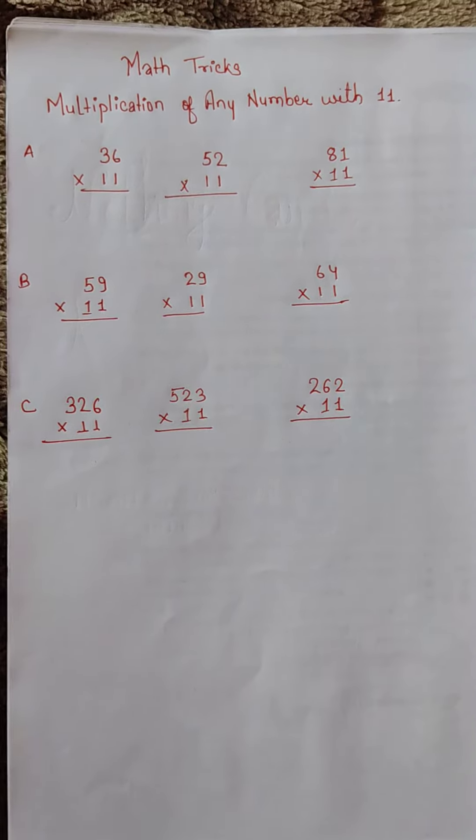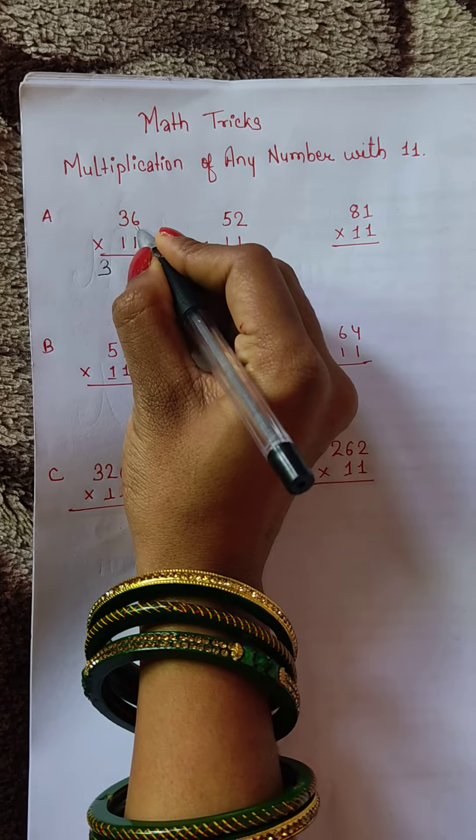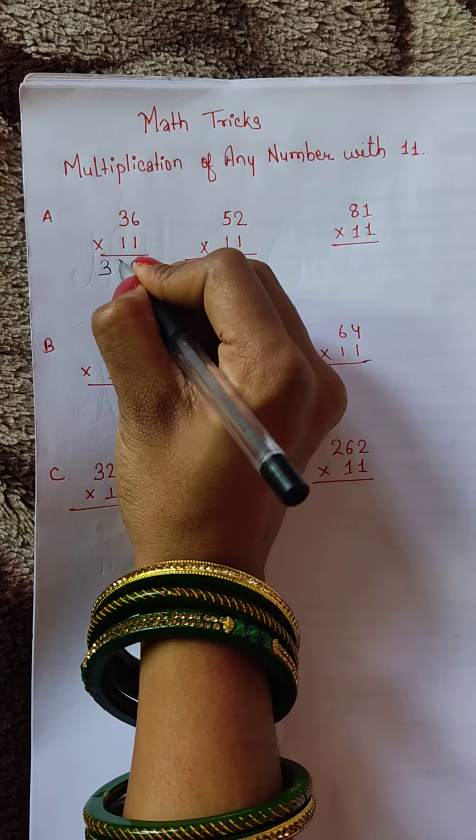Just write down 3 here and 6 here, and 3 plus 6 equals 9. So we get 396.